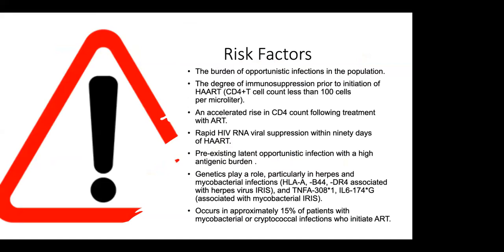Risk factors include: the burden of opportunistic infections in the population, the degree of immunosuppression prior to initiation of ART - specifically a CD4 count less than 100 cells - accelerated rise in CD4 count following ART, rapid HIV RNA suppression within 90 days of initiation of ART, pre-existing latent opportunistic infection with a high antigenic burden, and genetics, which play a role particularly in herpes and mycobacterial infections.